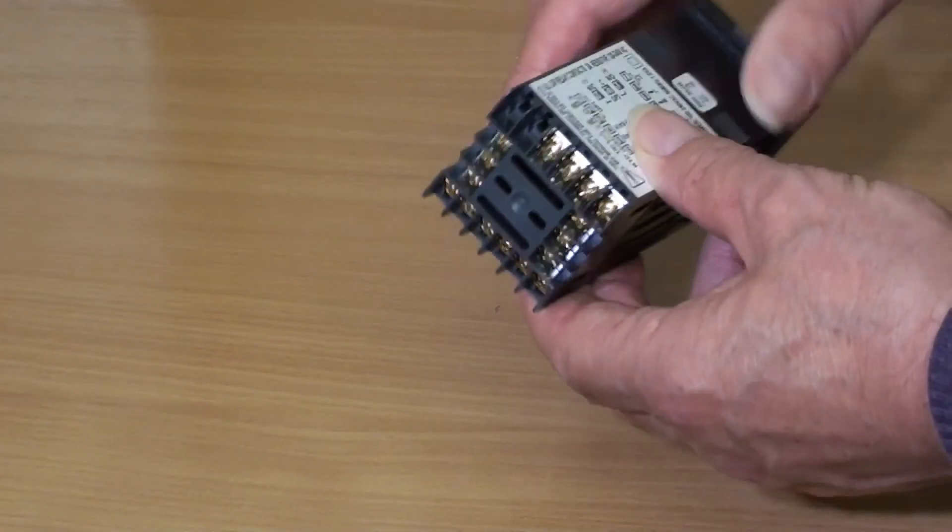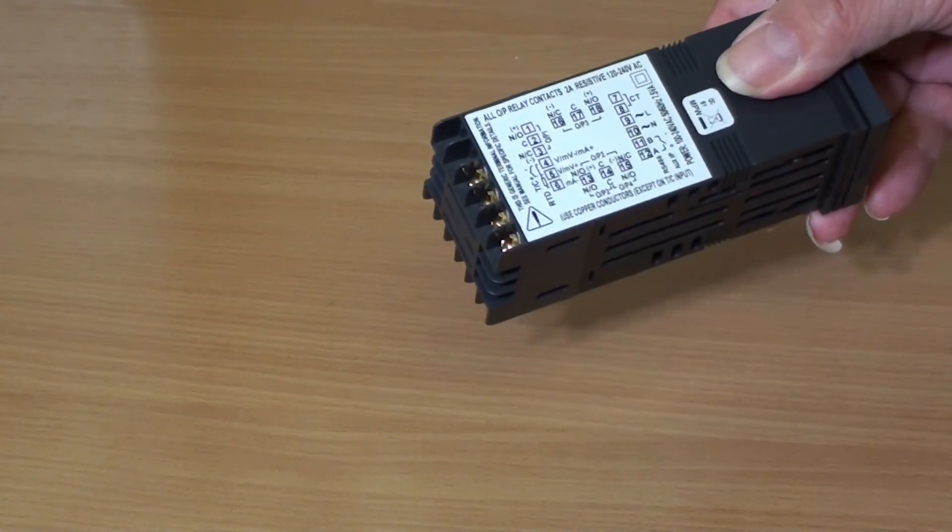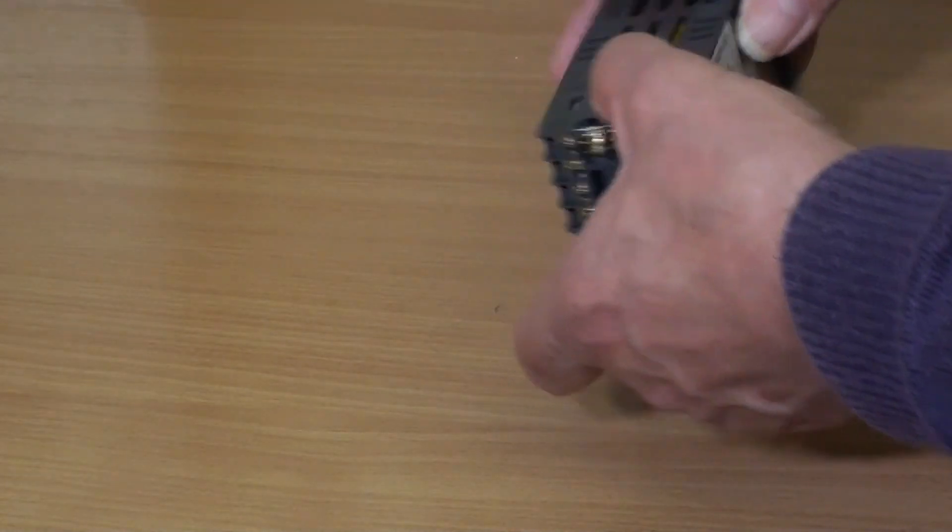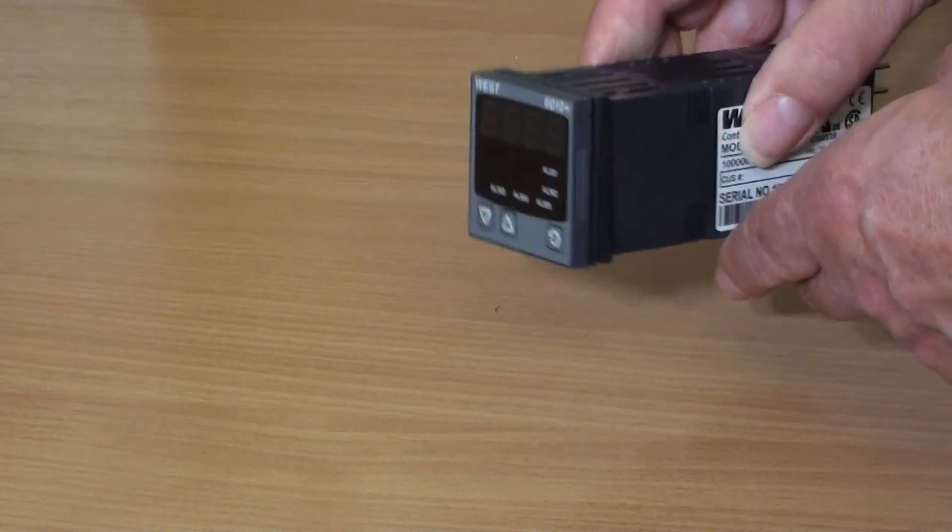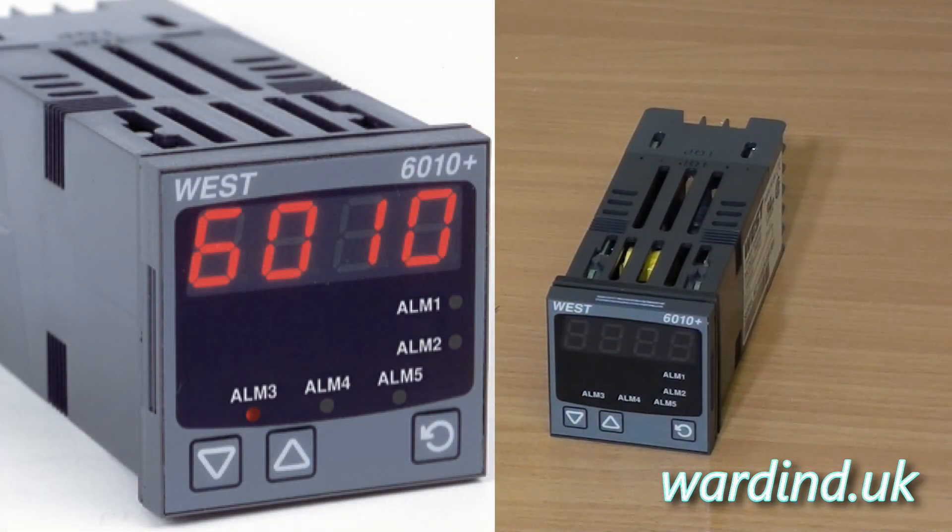The P6010 is available with a power supply of either 100-240V AC or 24-48V AC or DC, and is available with either a red or green display.